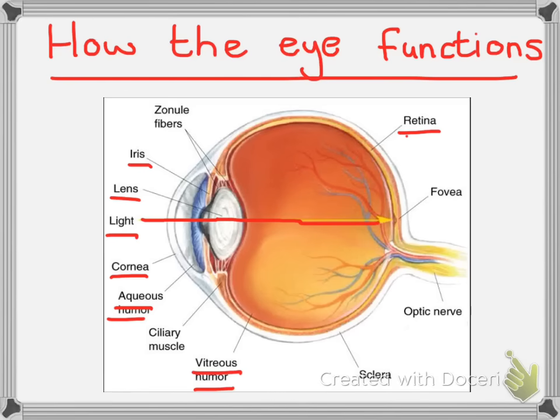then a structure called the fovea, or in your textbook it's called the yellow spot, is where we actually produce our highest level of focus. In other words, we make our sharpest vision, just in this small little area over here.